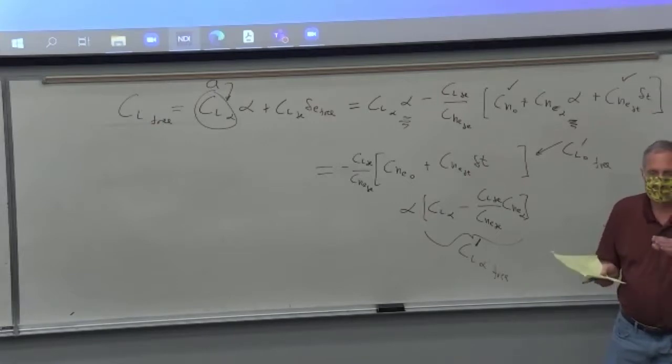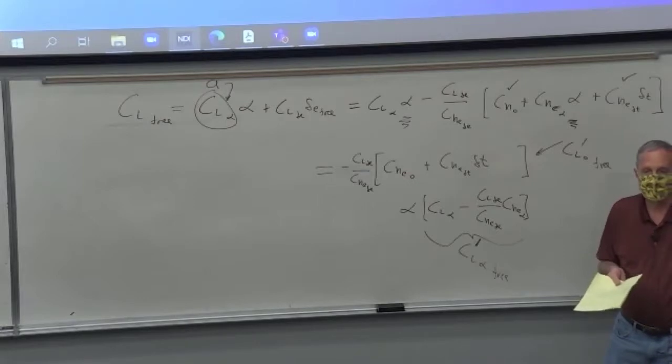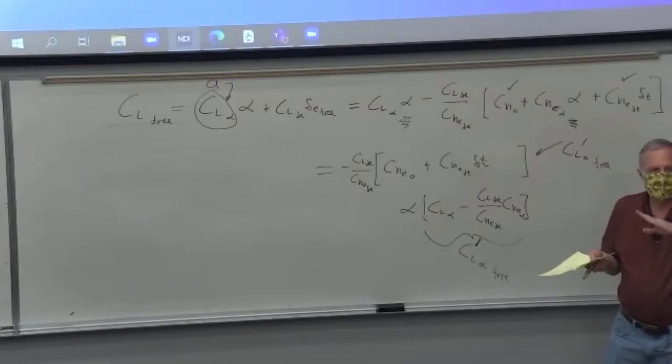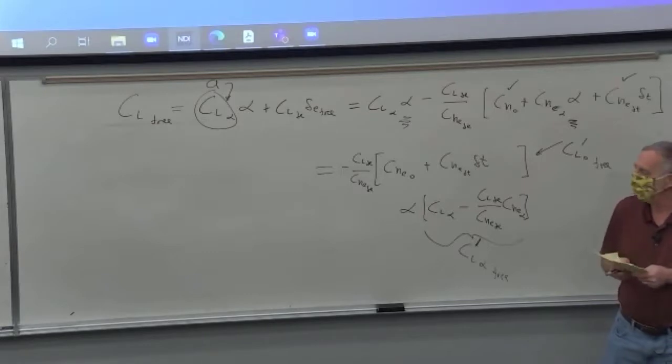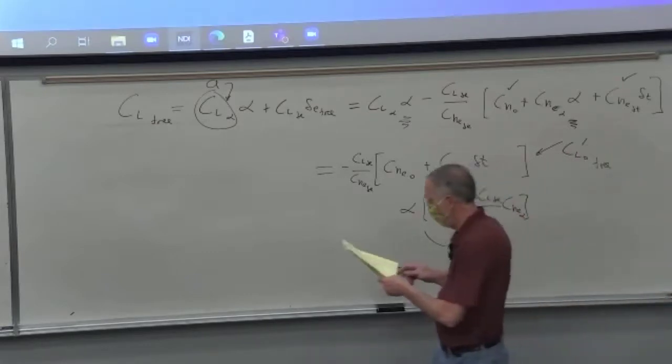Again, because the elevator is floating in response to the gust. Gust comes along, changes the angle of attack of the airplane. CM alpha primary stability is going to want to be pitched down. But what does the elevator do? If the elevator floats in a way that makes the airplane pitch up instead of down in response to the gust, then that changes the stability. So on the other board, we're going to do that.